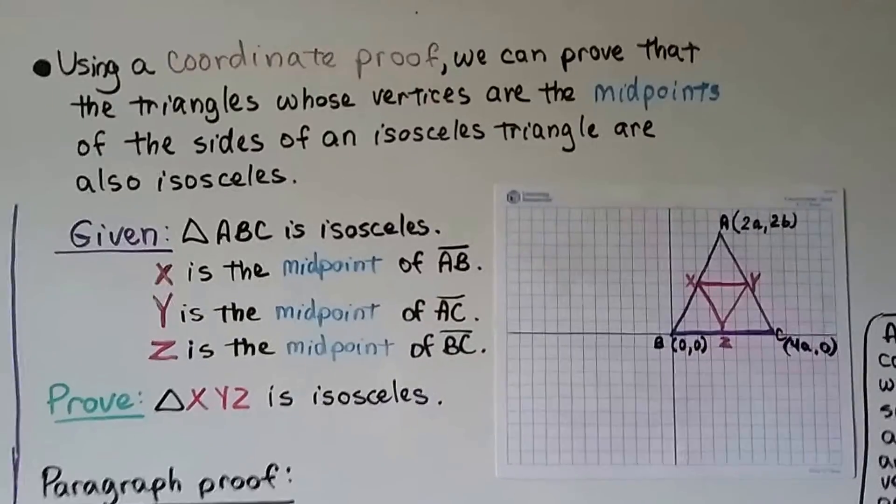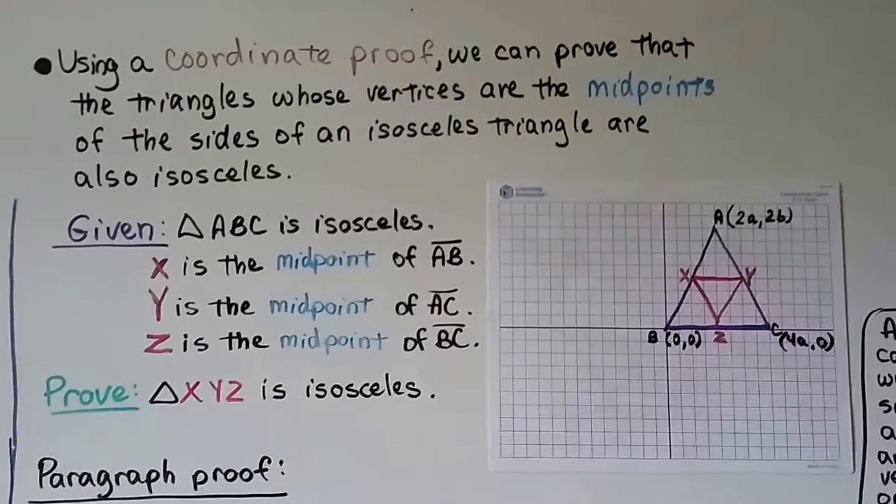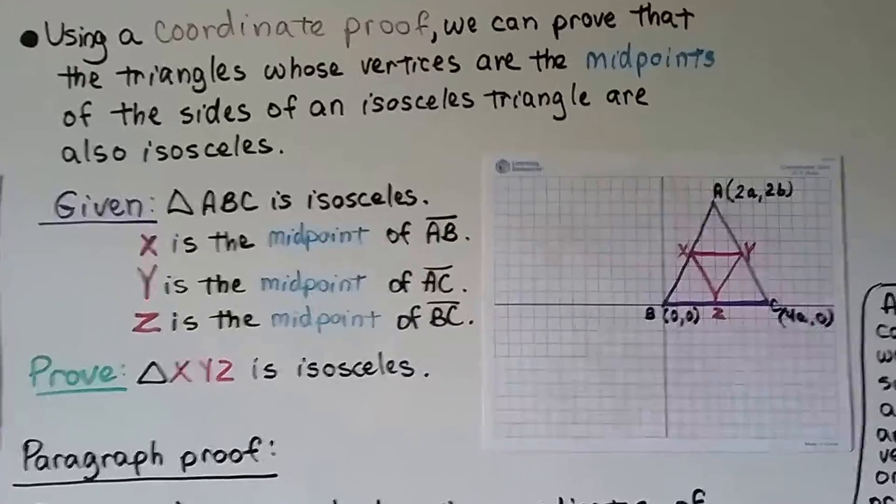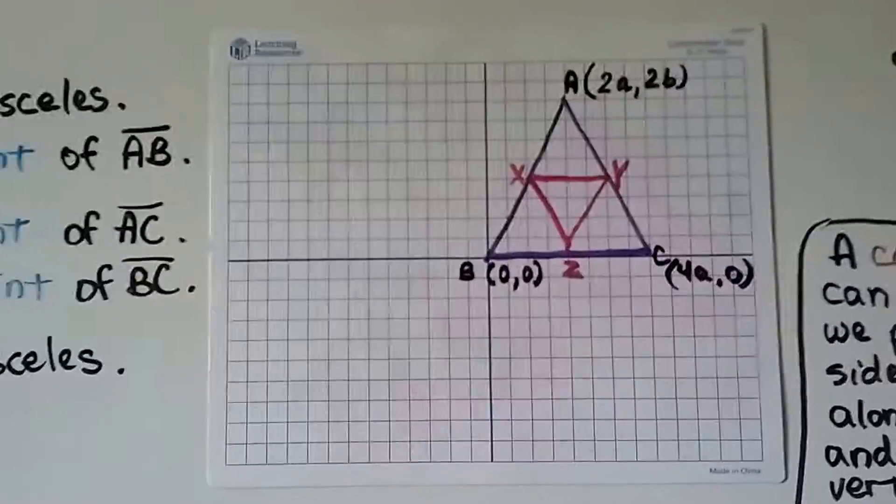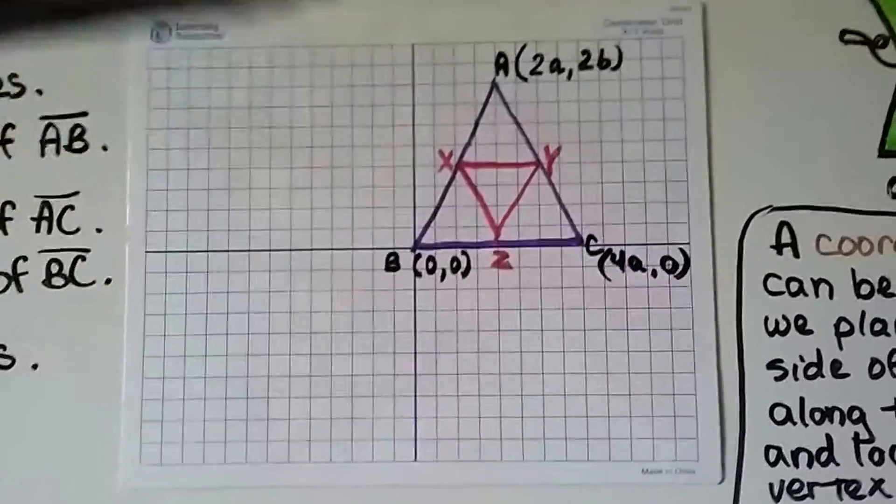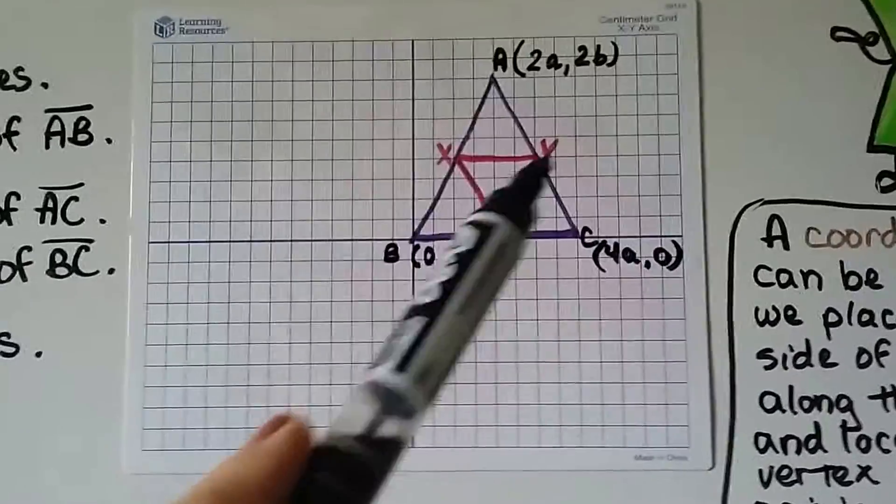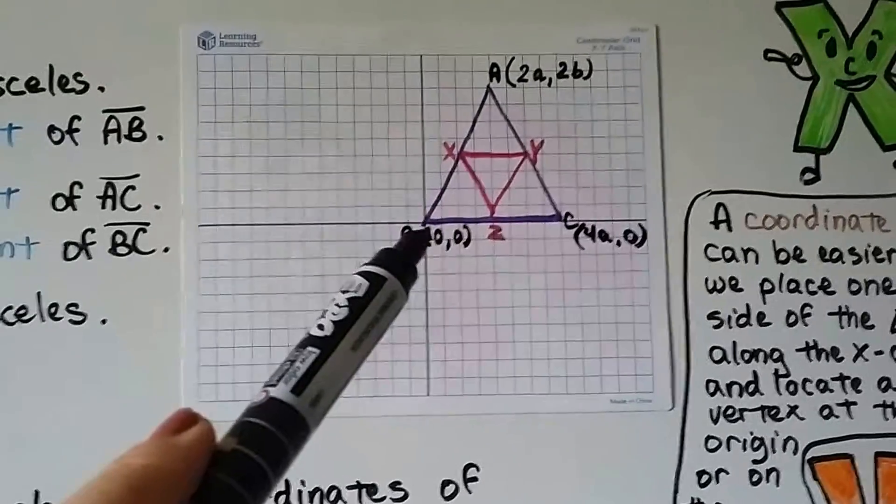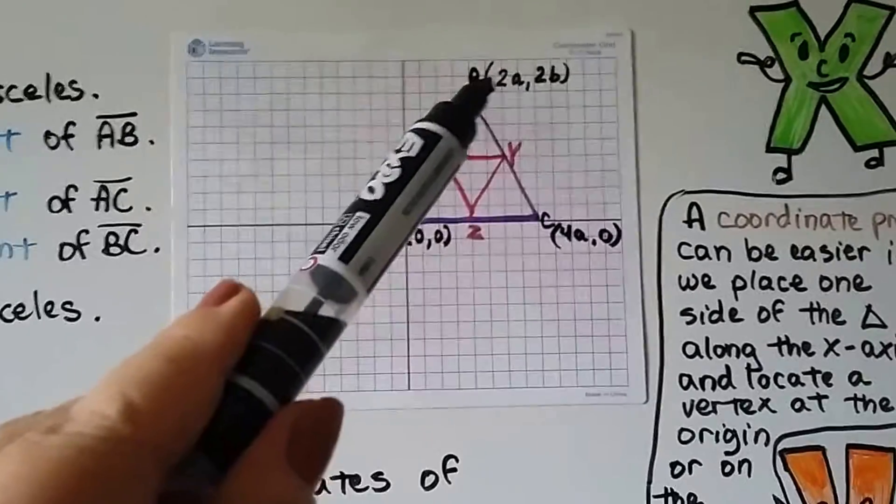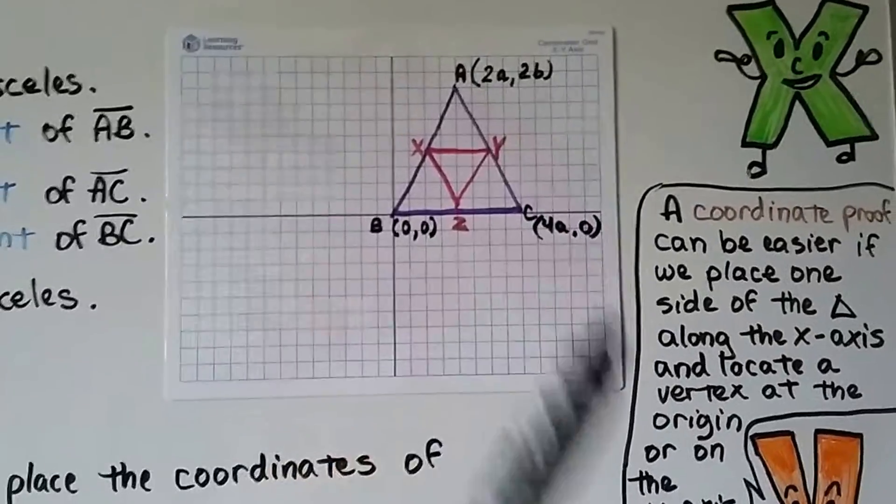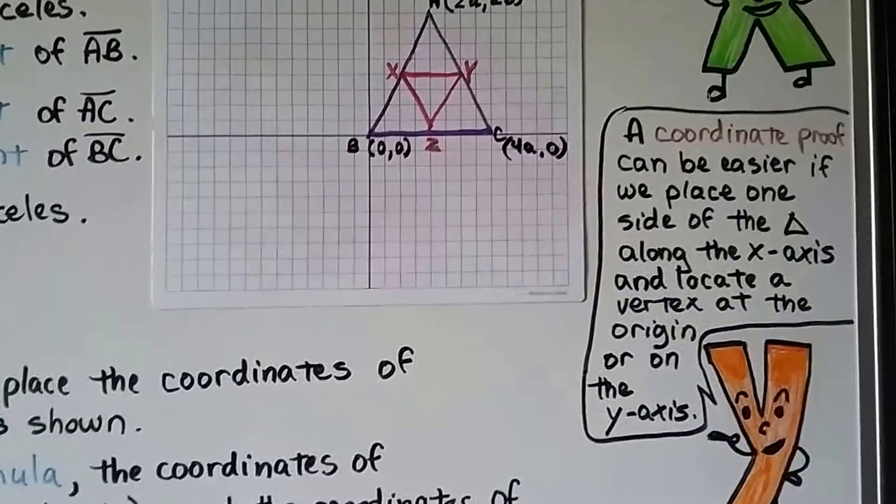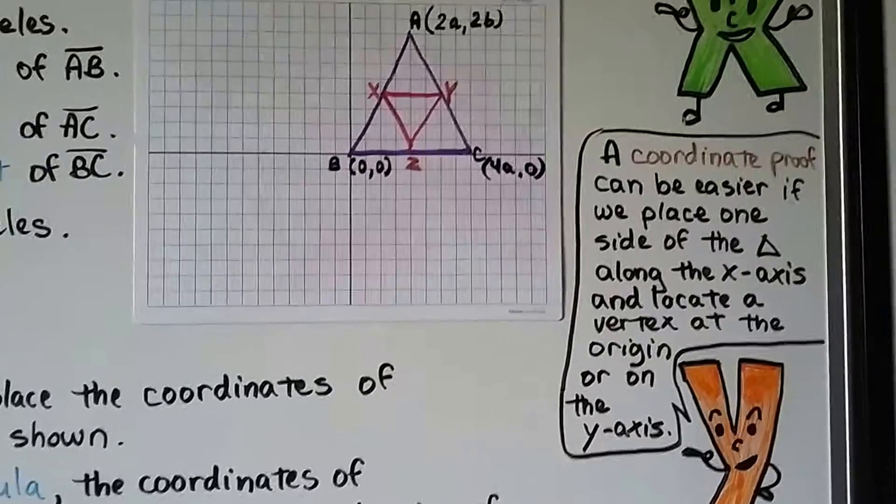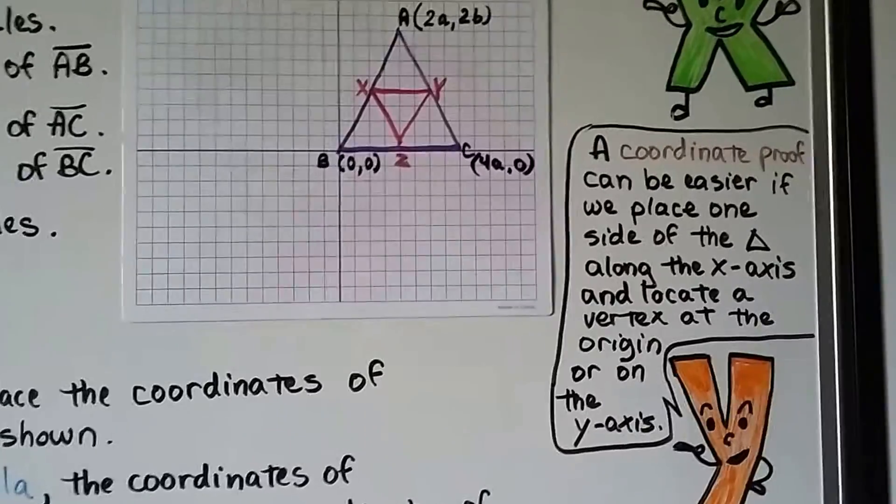Using a coordinate proof, we can prove that the triangles whose vertices are the midpoints of the sides of an isosceles triangle are also isosceles. So taking a look at this, we've got a big purple isosceles triangle ABC, and inside of it is the little triangle XYZ. We can see that B is at the origin (0, 0), A is at (2a, 2b), and C is at (4a, 0). A coordinate proof can be easier if we place one of the sides of the triangle along the x-axis and locate the vertex at the origin or on the y-axis.